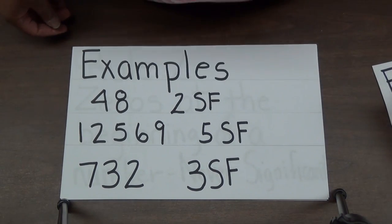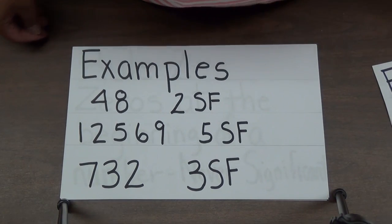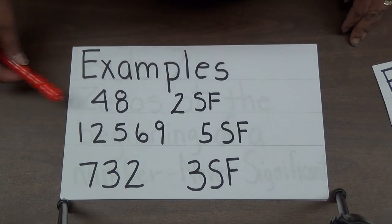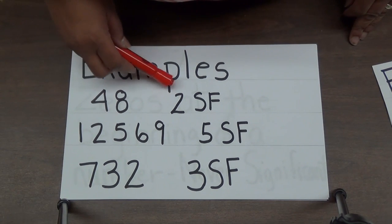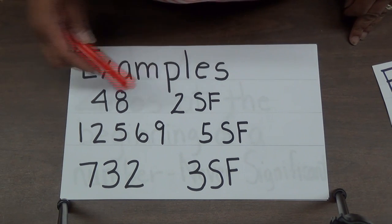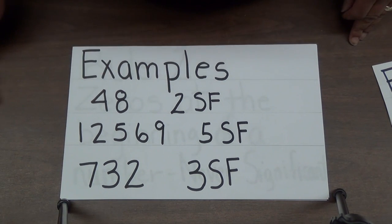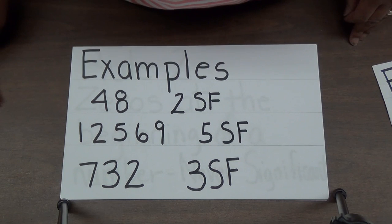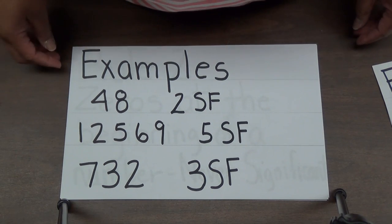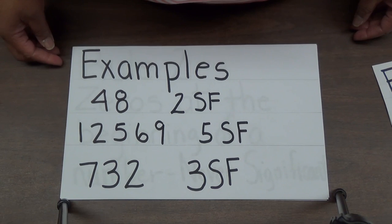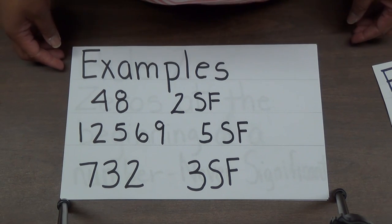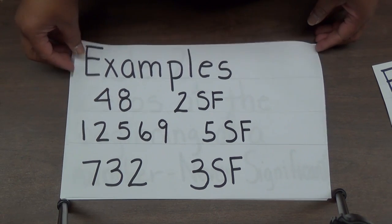For example, the number 48 has two significant figures — SF stands for Significant Figures. The number 12569 has five significant figures. The number 732 has three significant figures.